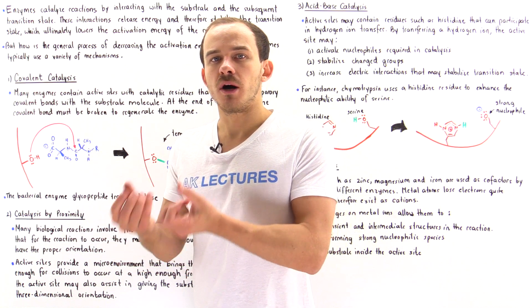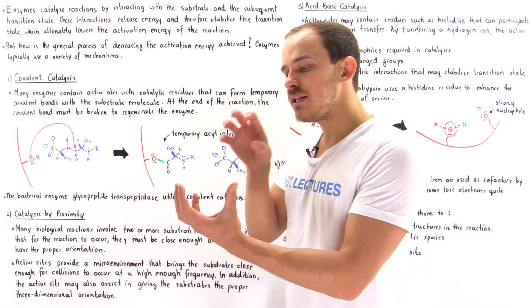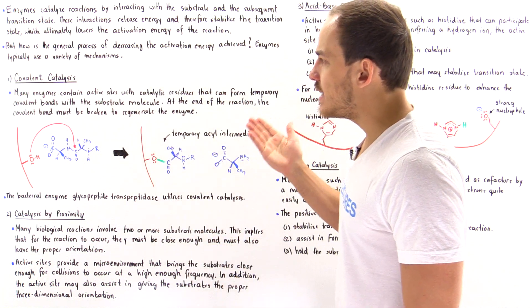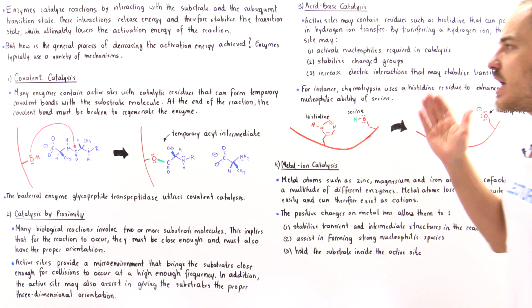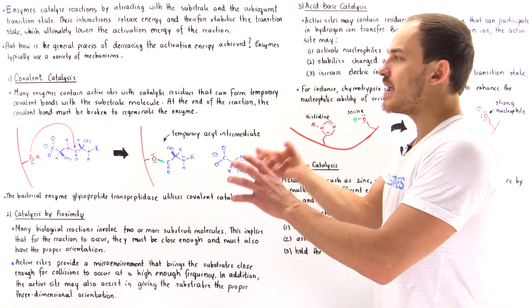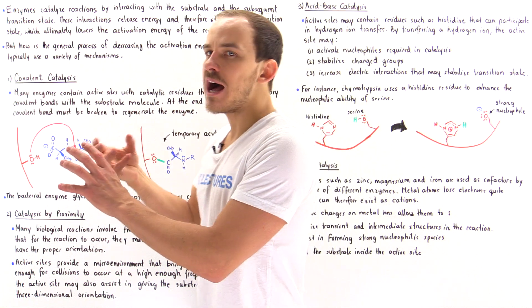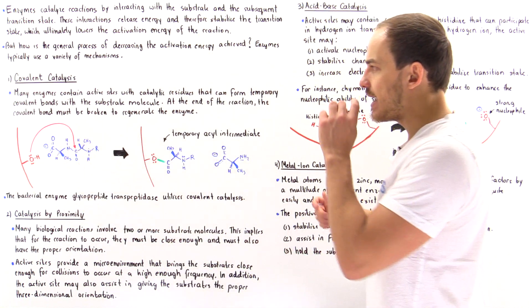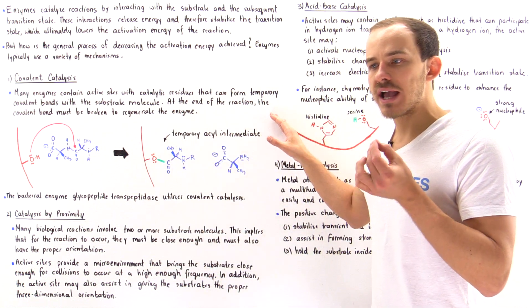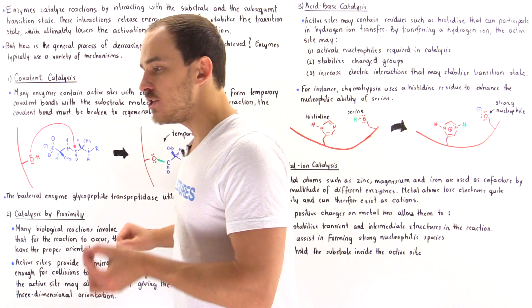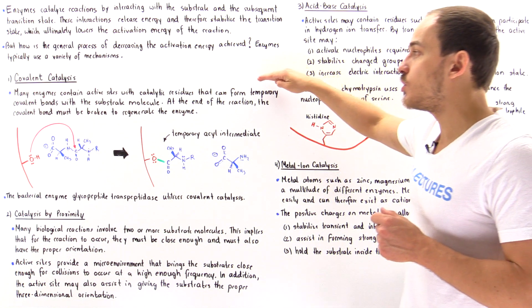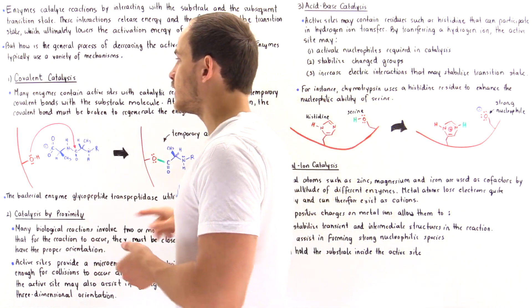Why would we want to form a covalent bond? One reason is to basically keep that substrate molecule in place inside the active site. Many enzymes contain active sites with catalytic residues that can form temporary covalent bonds with the substrate molecule, and that can be used to keep that molecule in place until that reaction actually takes place. At the end of the reaction, because we always have to regenerate our enzyme, we have to break that bond. That's exactly why we call this a temporary or transient covalent bond.